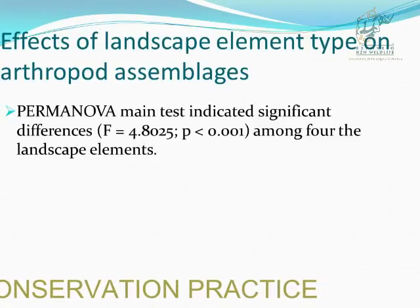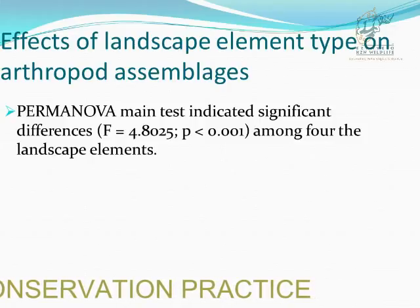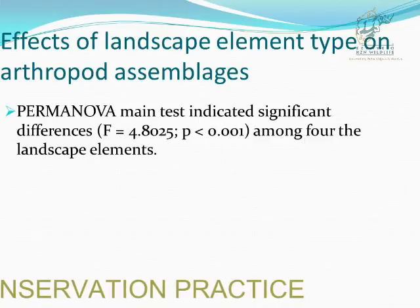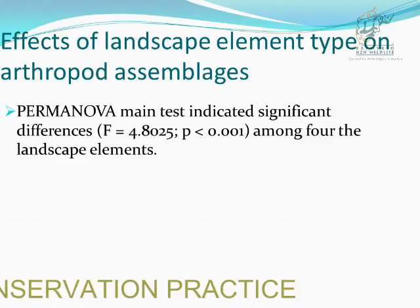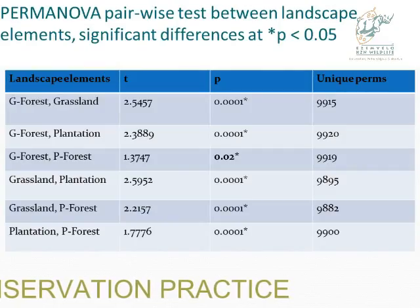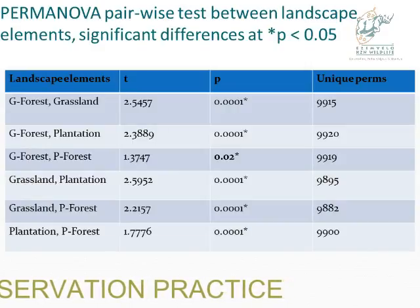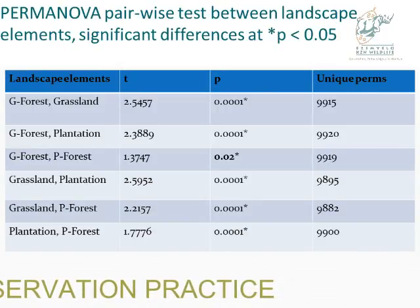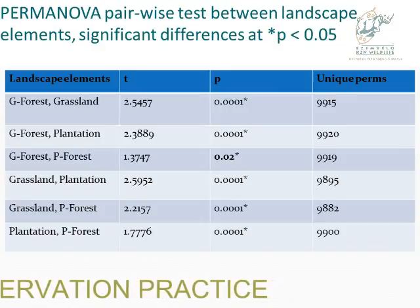We also tested the effect of landscape type on arthropod assemblages using PERMANOVA, and the main test indicated significant differences among all four landscape elements. A pairwise test indicated significant differences between all pairs, but the differences between natural forests adjacent to grassland and natural forests adjacent to pine plantation were very weak compared to the other pairs.